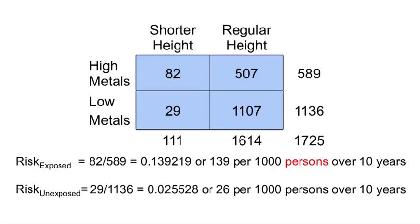Now, I would like you to calculate the risk ratio of decreased growth, or shorter height, potentially related to heavy metal exposure.